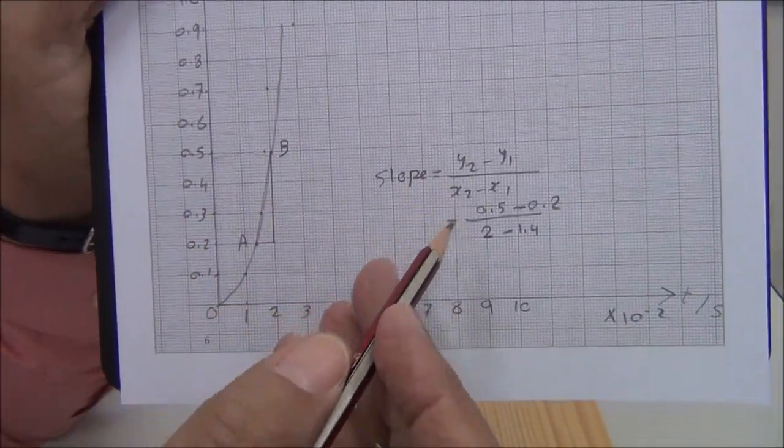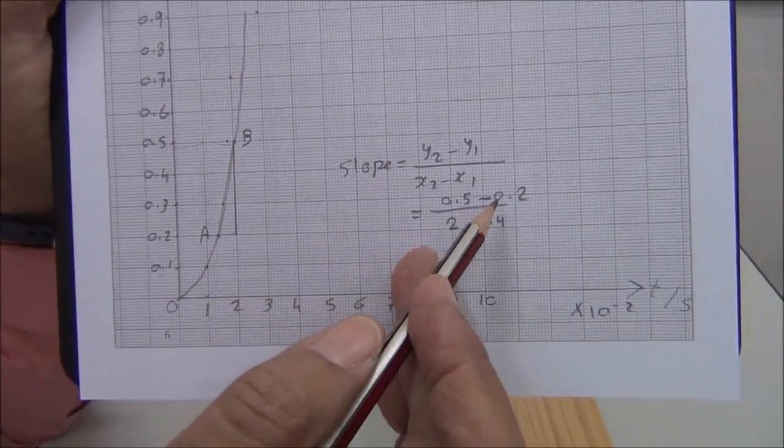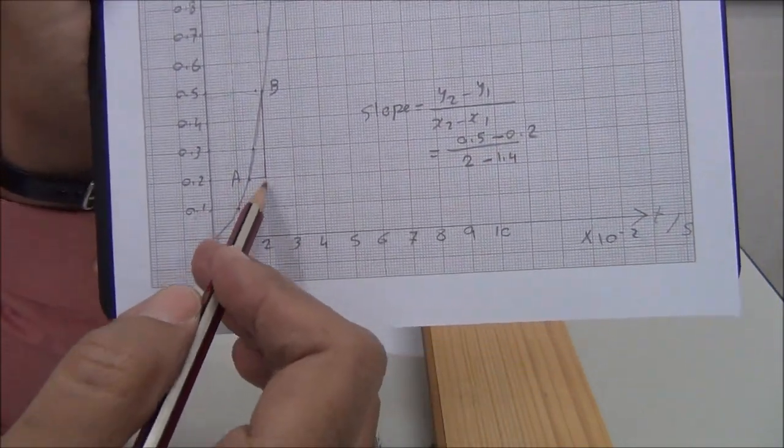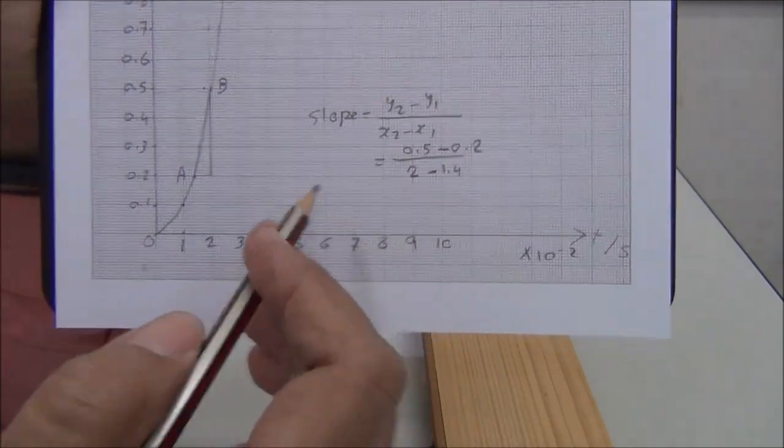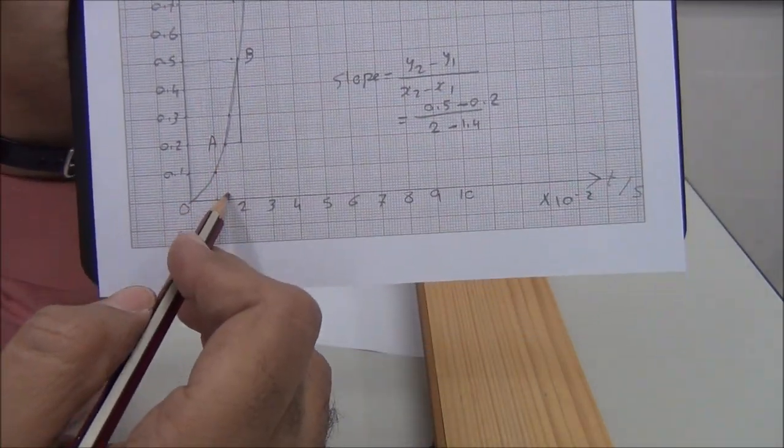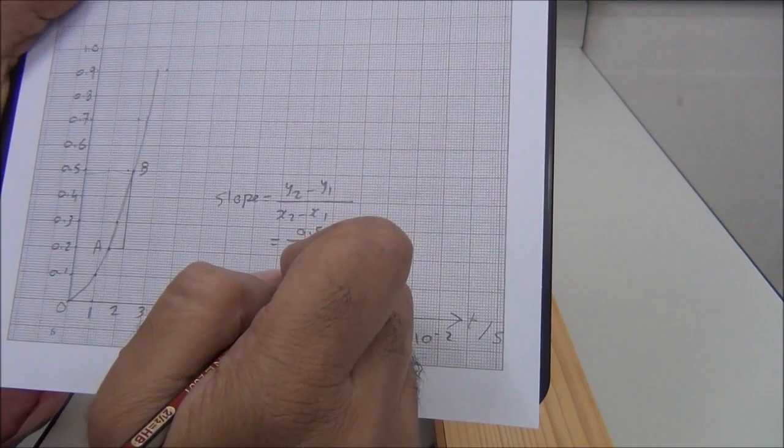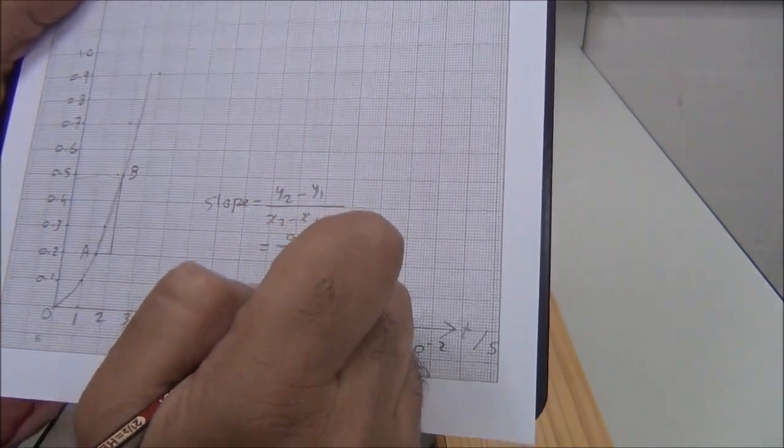The slope equals y2, which is 0.5, minus y1, which is 0.2, over x2, which is 2 (but remember we have to multiply by 10 to the power negative 2), minus this point down which is 1.4. All of this we have to multiply by 10 to the power negative 2.